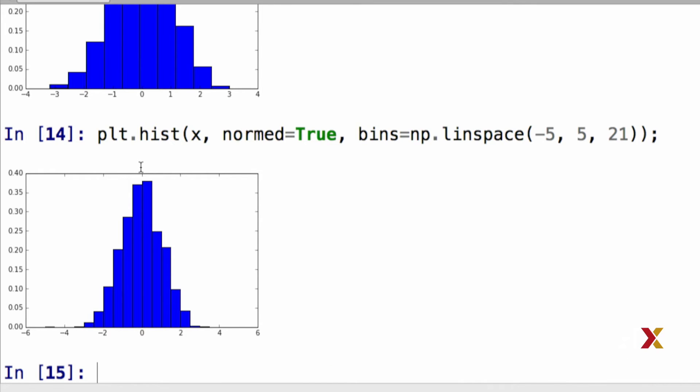In this case, you see that the histogram looks different. That's because we have specified 20 bins between the numbers minus 5 and plus 5.